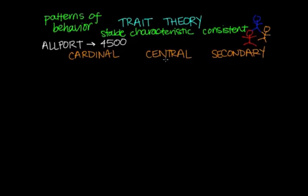An example of a central trait is honesty, sociability, or shyness, which are less dominant than cardinal traits. A secondary trait is something like a love for modern art or reluctance to eat meat - these are more preferences or attitudes.